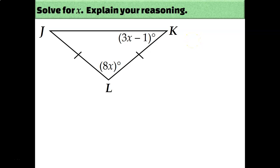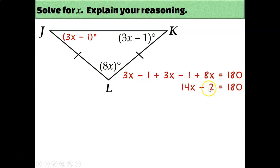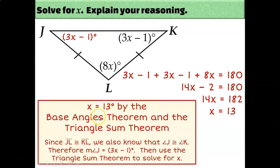Here's another isosceles triangle where two sides are marked as congruent, so the base angles must be congruent. One base angle is labeled 3x − 1°, and since angle J is also a base angle, it must equal 3x − 1° as well. Using the triangle sum theorem: (3x − 1) + (3x − 1) + 8x = 180. Combining like terms, adding 2, and dividing by 14 gives x = 13. The reasons are the base angles theorem and the triangle sum theorem.